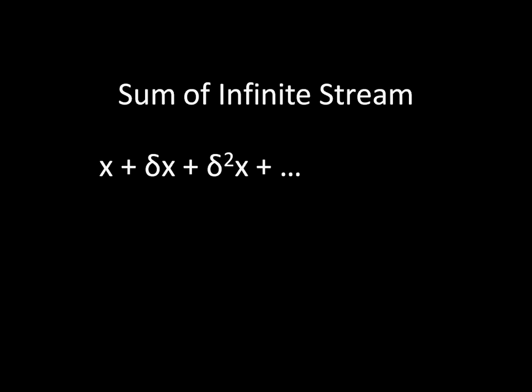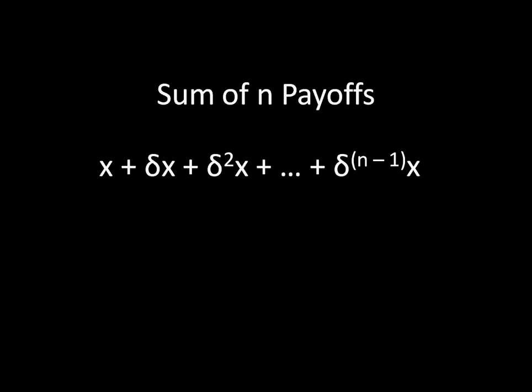And to show you how we can exploit them, rather than thinking about the infinite stream, let's think momentarily about the sum of the first n payoffs, and then eventually we'll get back to the infinite stream. So rather than having just a dot dot dot, we finish off with something solid, we finish off with a delta to the n minus one times x. That is the representation for the first n payoffs.